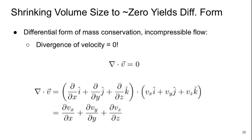Now if we take our volume size and shrink it down to zero, this will yield a differential form of our conservation law. The divergence of the velocity has to be zero for the differential form of mass conservation in incompressible flow. So grad dot V equals zero. This grad operator is d/dx in the x direction, d/dy in the y direction, d/dz in the z direction with unit vectors i, j, k, dotted with the velocity vector Vx, Vy, Vz. So we get dVx/dx plus dVy/dy plus dVz/dz must equal zero. That's the expression for conservation of mass.